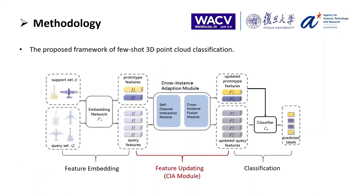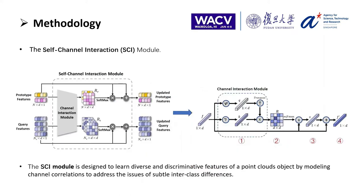Therefore, based on the prototypical network, we propose a strong network to learn more discriminative features with the Cross-Instance Adaptation (CIA) module, which can mitigate the distribution shift for better classification. The CIA consists of two major modules: the Self-Channel Interaction (SCI) module and the Cross-Instance Fusion (CIF) module. The SCI module is designed to learn diverse features by modeling channel correlations to address the issue of subtle interclass differences.